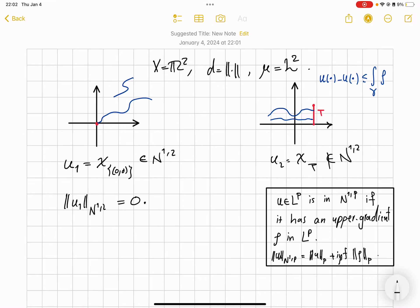Via the notion of upper gradients we have defined the class of Newtonian Sobolev functions on metric measure spaces, and the two examples you see on the screen are, to me, two of the most important and critical ones to fully understand.